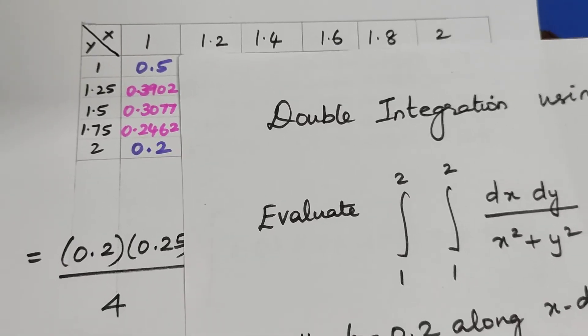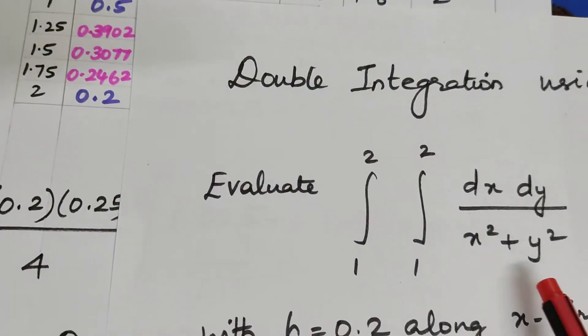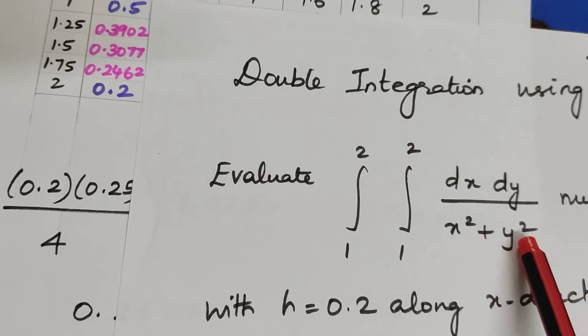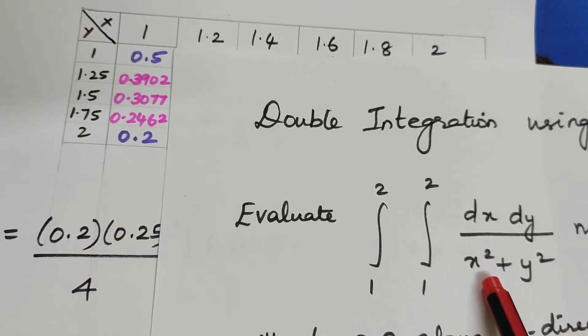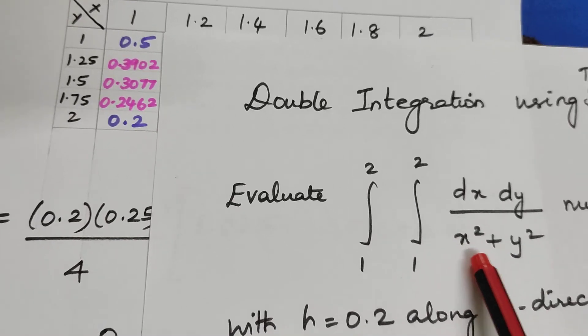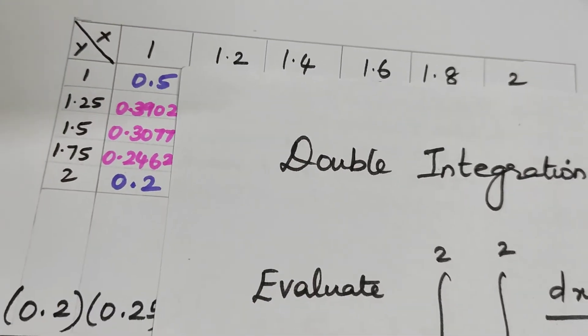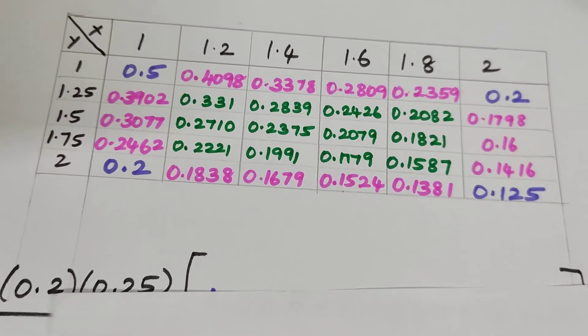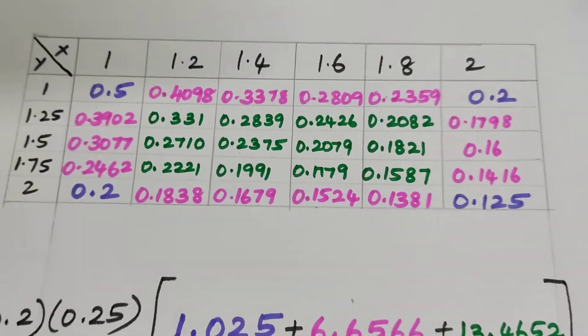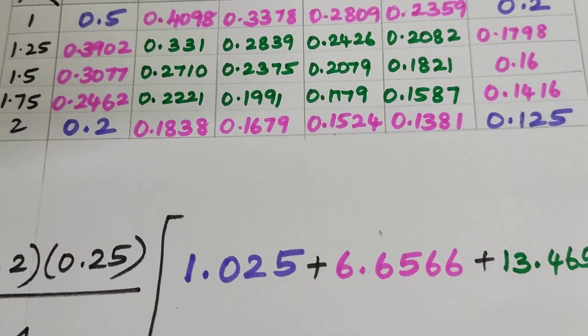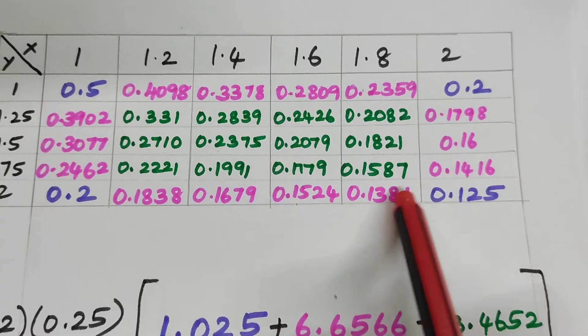Let us go in for the first column. How did I get this 0.5? This is my function: 1 upon X square plus Y square. I have to substitute 1 and 1 for X value as well as Y value. If I substitute, it is going to be 1 by 2, which is 0.5. Likewise, you have to enter this entire table. You may wonder why I have done in different colors so that you people will know how to take the extremes and substitute in the formula.